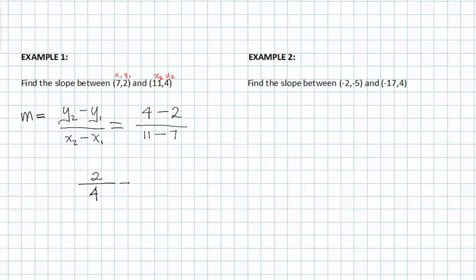And then we look at that and realize that it can be reduced. A common factor of 2 can be taken out of both, and our slope is 1 half.